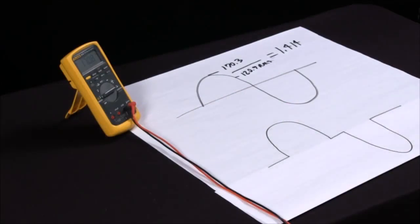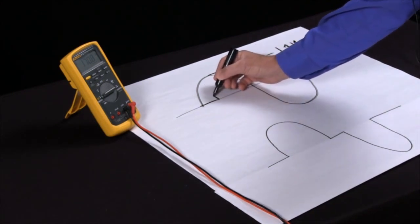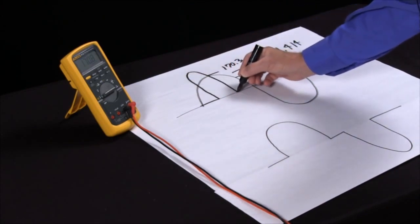Now, if we have a signal that is distorted or has quite a bit of harmonics in it, what happens is the peak gets higher and the RMS gets lower.